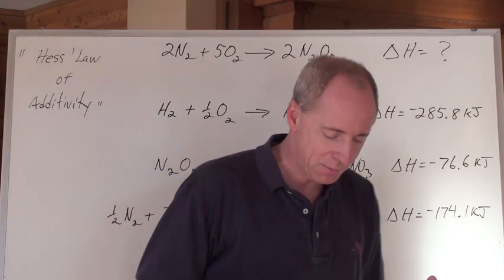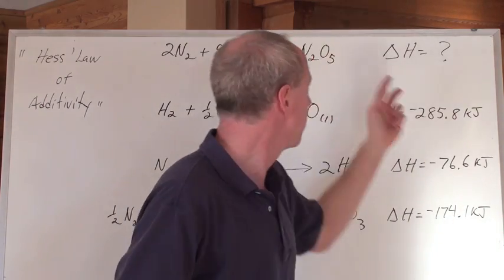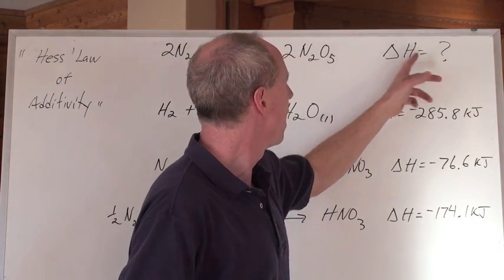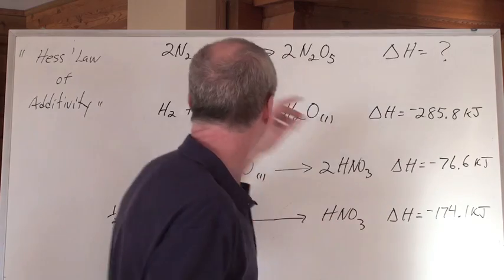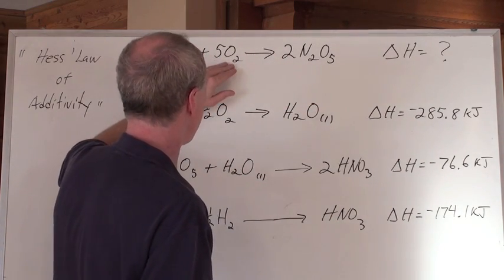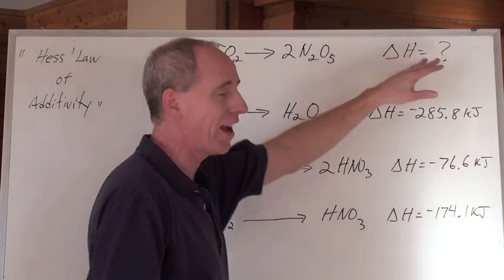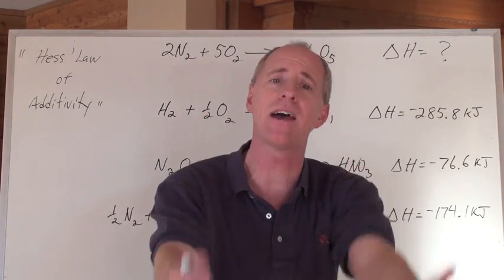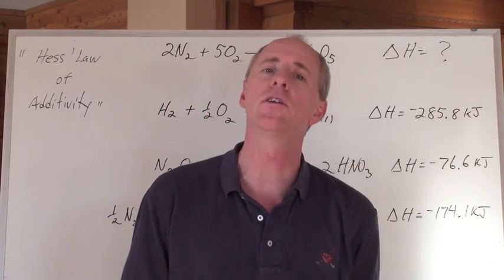Now you're going to say, chem guy, if I had a molar heat of formation for N2O5, I could just look that up because this is an equation that N2O5 is forming from its elements. And because there's a 2 in front, if I had the molar heat of formation in front of me, I'd multiply it by 2 and I'd have the answer. You are absolutely right.